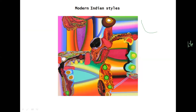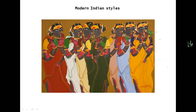Then there's Bose Krishnamachari — very, very abstract. Sometimes you won't even understand what he's trying to convey until you read what he has actually said about his paintings. He has combined the richness of colors we see, but at the same time maintained a very easy-to-read kind of style in terms of the painting itself.